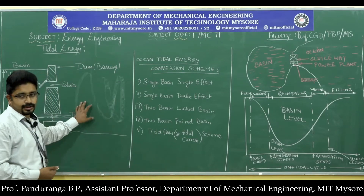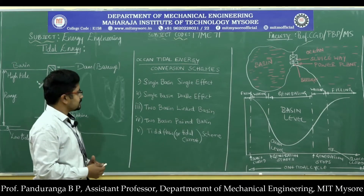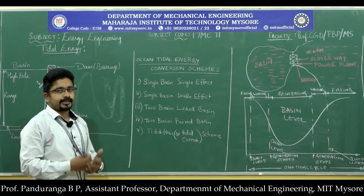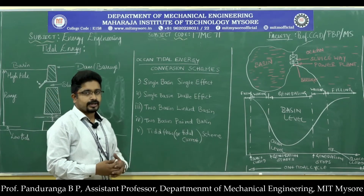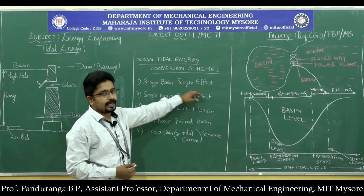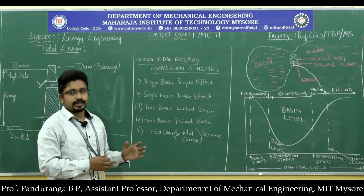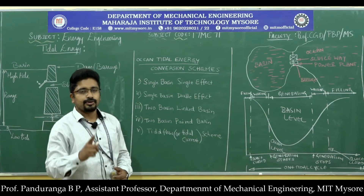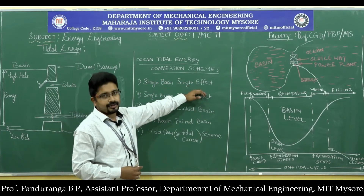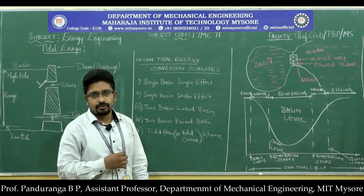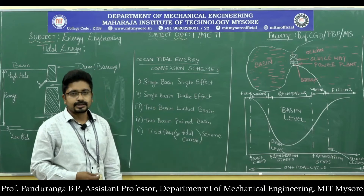There are basically 5 schemes through which we can extract energy from the tides. The first is the single basin single effect scheme, where we have one basin and energy conversion happens only during entry to or exit from the basin — either during high tide or low tide, but not both. The second is the single basin double effect scheme, where we extract mechanical energy both when water is filling the basin and when it is flowing out.